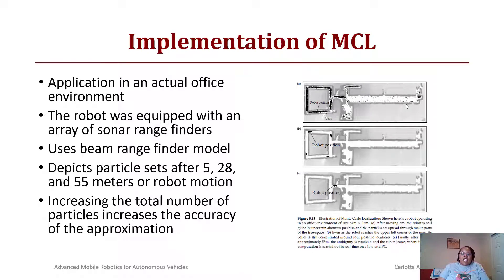Here's another application with a robot in an actual office environment. This robot was equipped with an array of sonar range sensors and uses a beam range finder model. These images depict particle sets after 5, 28, and 55 meters of robot motion. Notice when you first start, the robot could be anywhere along this area and even some into the office area. Once it detects it's in the corner, based upon importance weighting, I now only have three or four possible locations in the corners of the office, but the one where it actually is is a little bit larger.